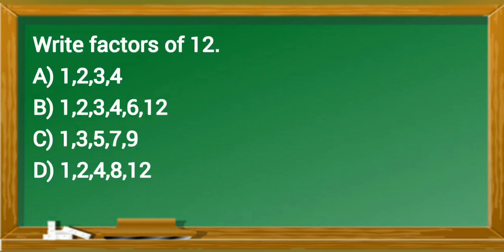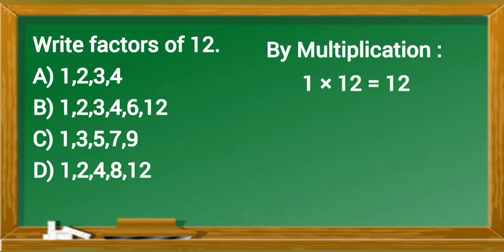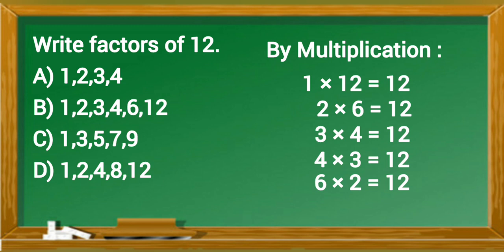Write factors of 12. By multiplication: 1 times 12 equals 12, 2 times 6 equals 12, 3 times 4 equals 12, 4 times 3 equals 12, 6 times 2 equals 12.